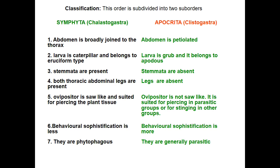Fourth: thoracic and abdominal legs are present in Symphyta larvae but absent in Apocrita. Fifth: the ovipositor is saw-like in Symphyta — which is the character reflected in the name 'sawfly' — and is used to pierce and damage plant tissues. In Apocrita, the ovipositor is not saw-like; it is a normal ovipositor used only for egg-laying.